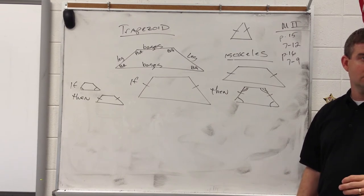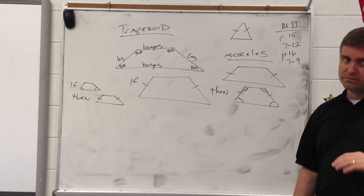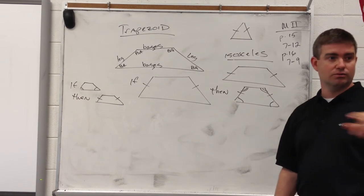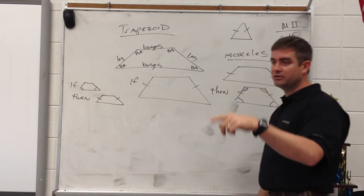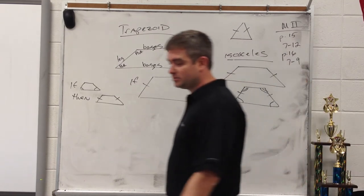If you already know that one pair of base angles is congruent, that's all you need. The theorem says 'a pair,' meaning all you have to do is have one pair.